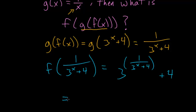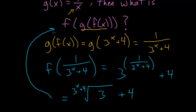And another way you can write this is using the root notation. So we have the 3 to the x plus 4 root of 3 and then plus 4 on the outside. And this expression written either way is equal to this f of g of f of x.